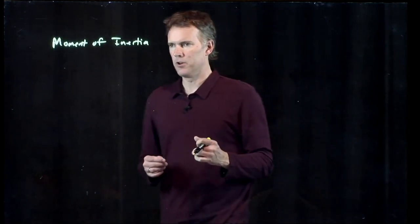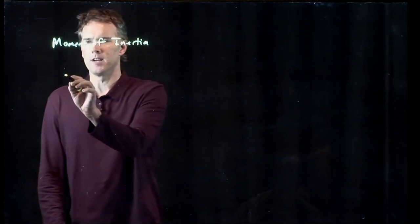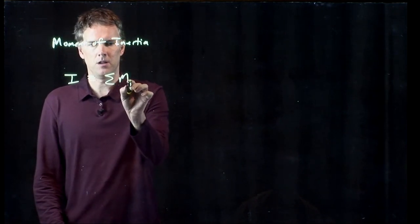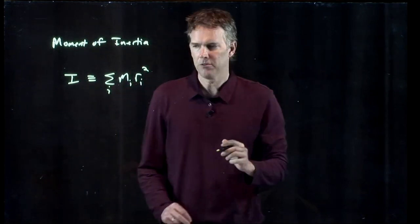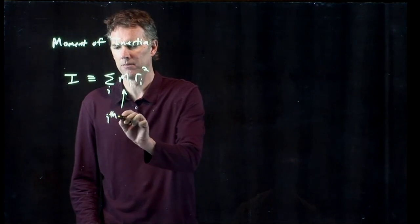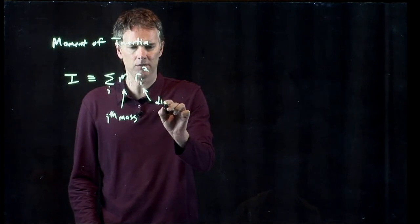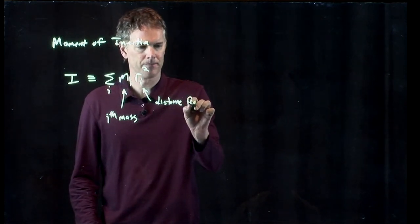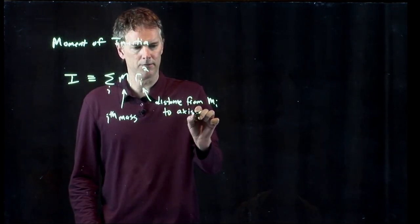Okay, moment of inertia for a system of individual particles is defined as this. The summation of m sub i r sub i squared, where m sub i is the i-th mass, and r sub i is the distance from m sub i to the axis of rotation.